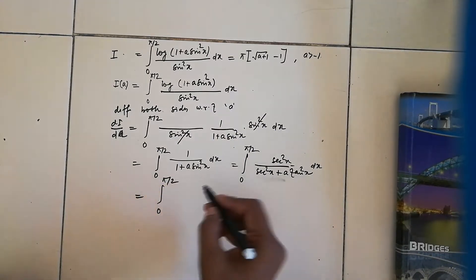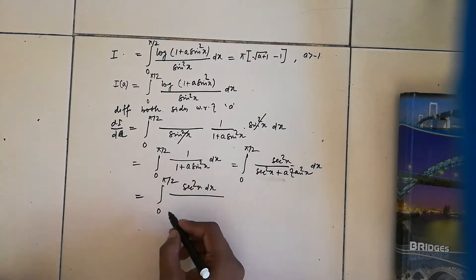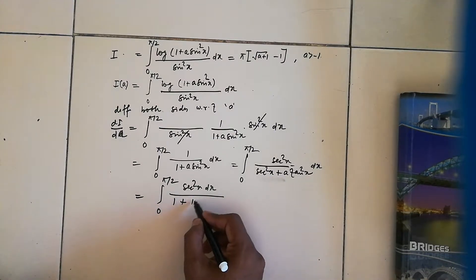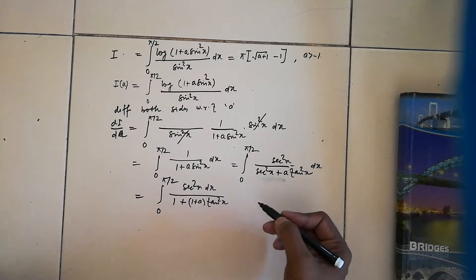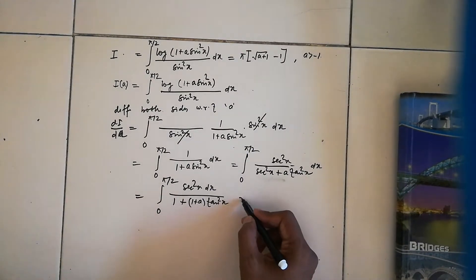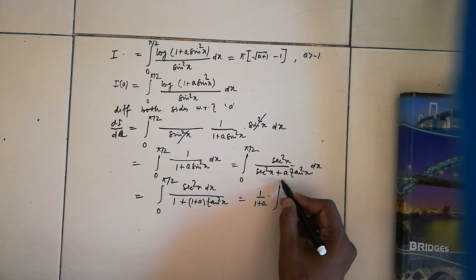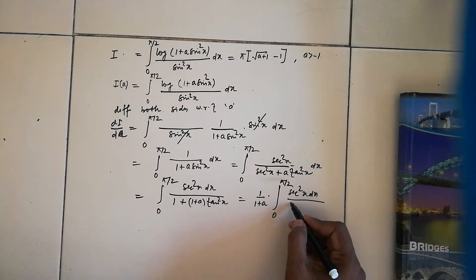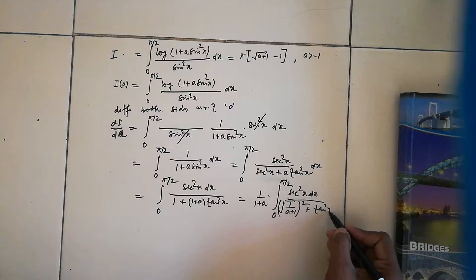Since sec²x equals 1 + tan²x, the denominator becomes 1 + tan²x + a·tan²x, which is 1 + (1+a)·tan²x. Taking 1/(1+a) common, we rewrite this in the form sec²x dx over (1/(1+a) + tan²x), setting up for a standard arctangent integral.